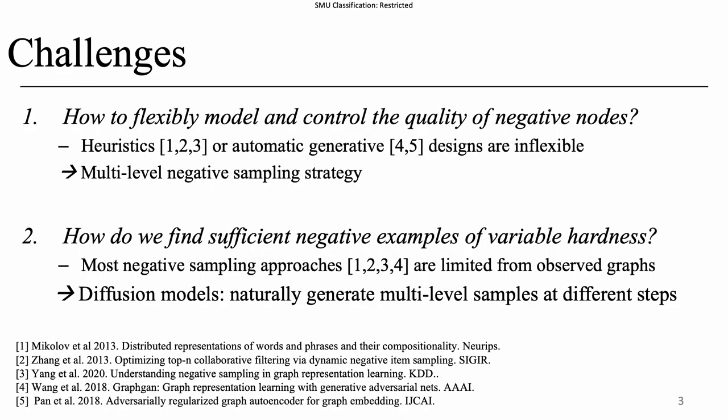The major challenge is how to flexibly model and control the quality of negative nodes. Existing heuristic or generative methods for hard negative samples require meticulous design and can be inflexible for different kinds of graphs. To this end, we propose a strategy of multi-level negative sampling to flexibly control the hardness level to our needs. This brings up a second challenge: where do we find negative examples of variable hardness? Most sampling approaches are limited to observed graphs, which can be noisy and incomplete.